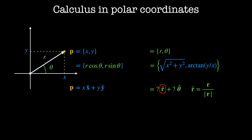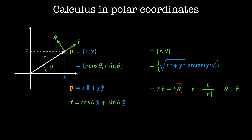r-hat is the unit vector in the r-direction. To get a unit vector, we take any vector — in this case the vector r — and divide it by its magnitude. This is the r-hat direction. In Cartesian coordinates, it's cosine(theta) units in the x-hat direction and sine(theta) units in the y-hat direction. Since polar coordinates are orthogonal, theta-hat everywhere must be perpendicular to r-hat. This is the theta-hat direction, and theta-hat equals minus sine(theta) in the x-hat direction plus cosine(theta) in the y-hat direction.